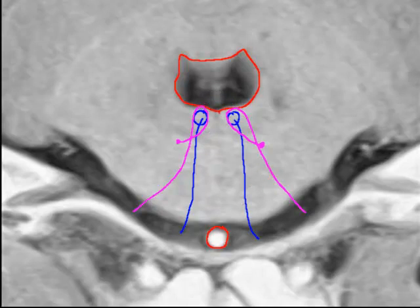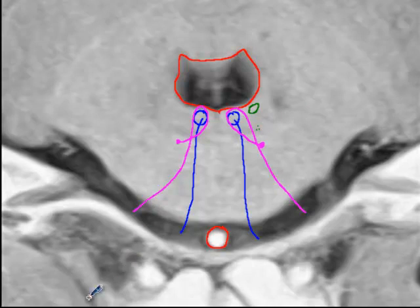The vestibular nuclei are located somewhere around here. The sympathetic fibers are also in the same distribution. The spinal tract and the nucleus of the fifth nerve are located around this area.